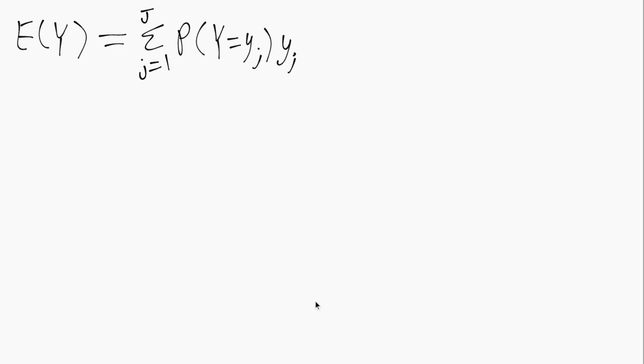In the first example we have a random variable where the probabilities are all equal to 1/3 and the values are just 1, 2, and 3. So if we plug that into our formula, this part here is just 1/3 for each term and then the values will iterate through 1, 2, and 3 in turn.